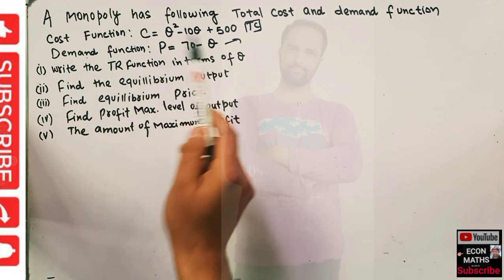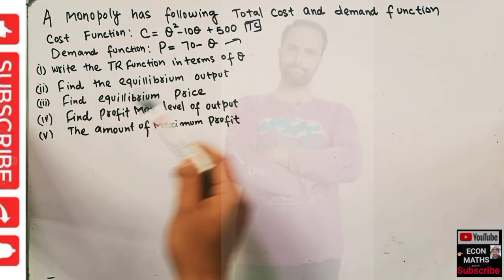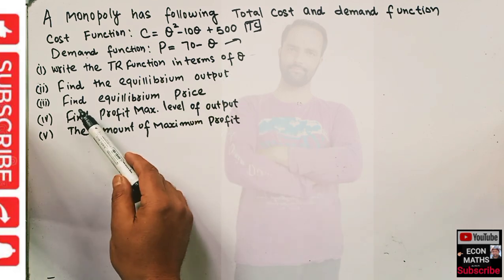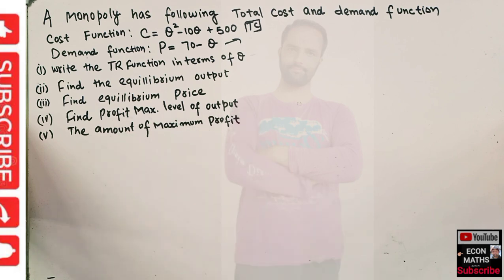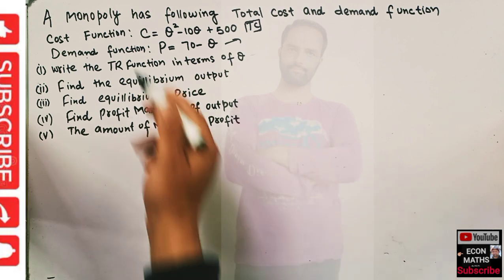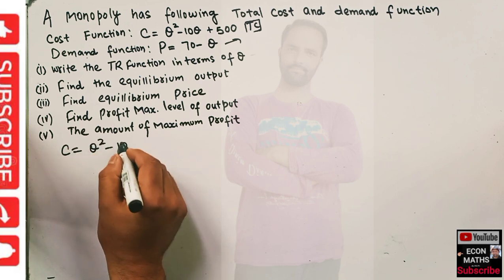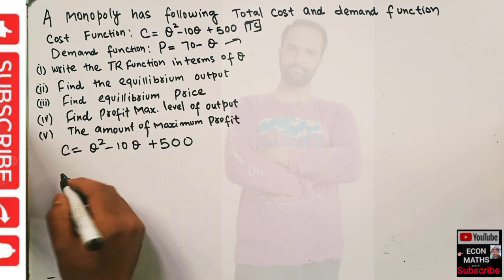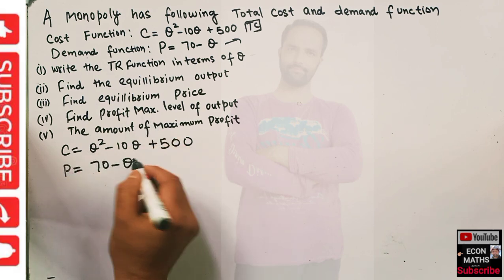The demand function is p equals 70 minus q. We have to: write the total revenue function in terms of q, find the equilibrium level of output, find the equilibrium price, find the profit maximizing level of output, and find the amount of maximum profit. So the cost function is q squared minus 10q plus 500, and the demand function is p equals 70 minus q.